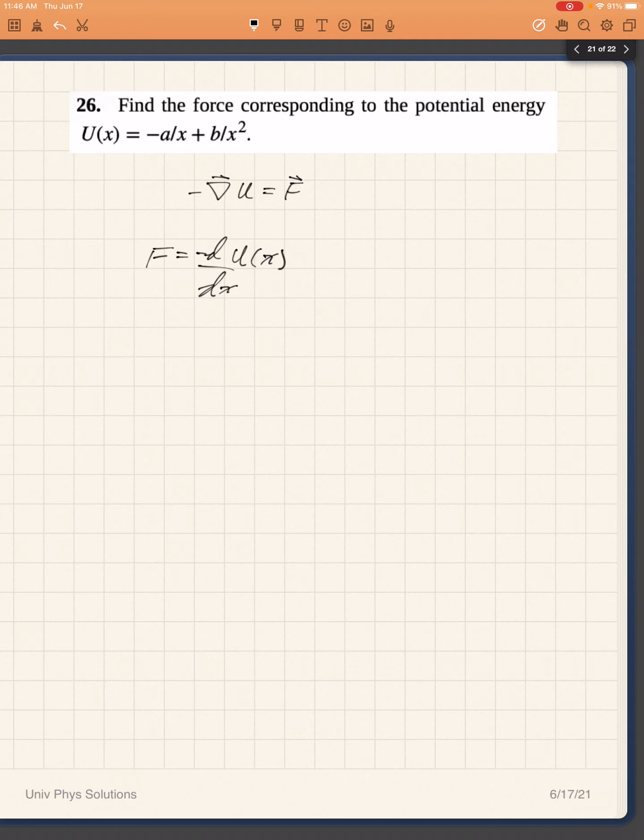So we just apply this operator to the function that we are given. F will be equal to negative d/dx of negative A over x plus B over x squared.